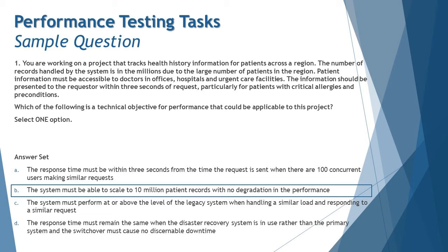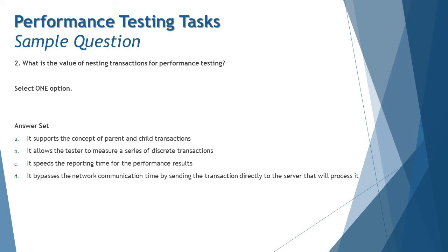The right answer is B — the system must be able to scale to 10 million patient records with no degradation in performance. Moving to question two, which looks short but is interesting: what is the value of nesting transactions for performance testing? To answer this, you first need to recall that a transaction is a set of actions performed by users, and you need to measure transaction time. Nesting transactions means a transaction is within another transaction — a parent transaction with child transactions inside it.